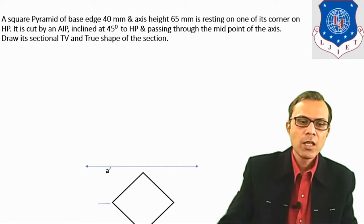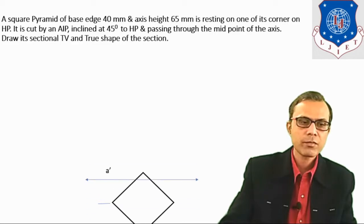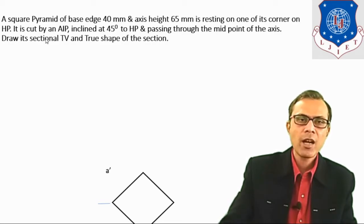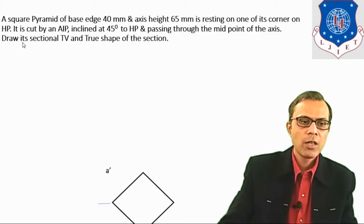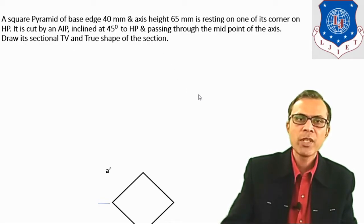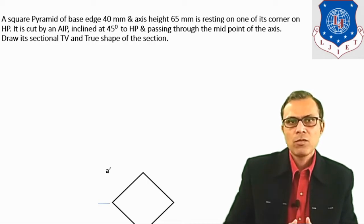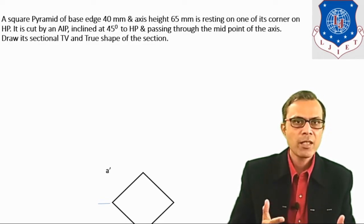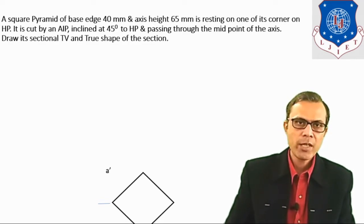Now let's see one example. The given data is a square pyramid of base edge 40 mm and axis height 65 mm, resting on one of its corners on HP. It is cut by an AIP inclined at 45 degrees to HP and passing through the midpoint of the axis. Draw its sectional top view and true shape of the section.